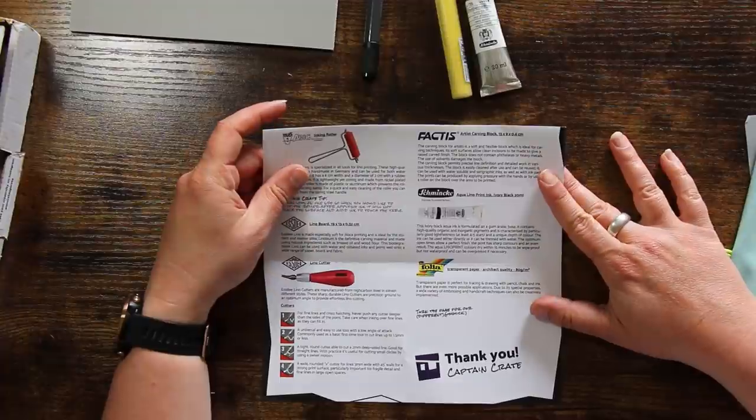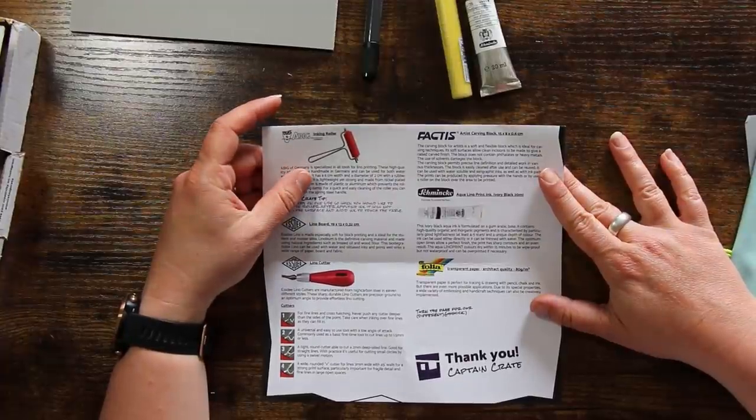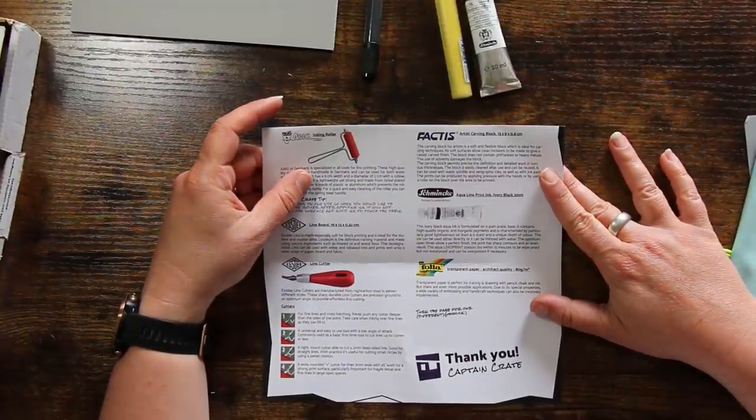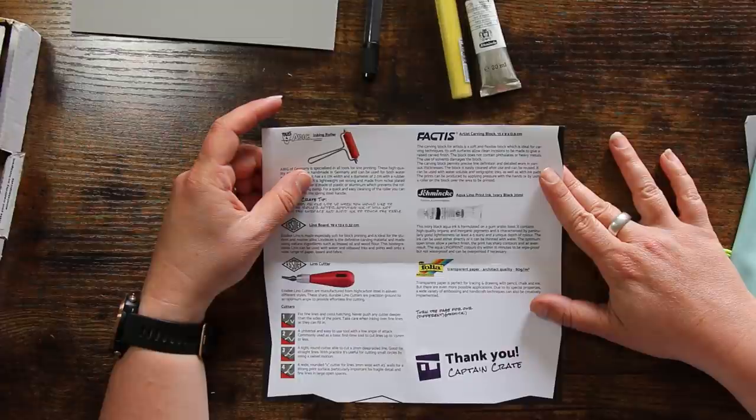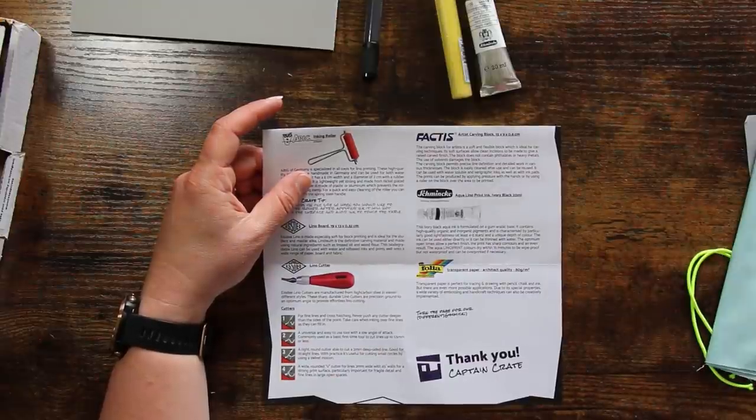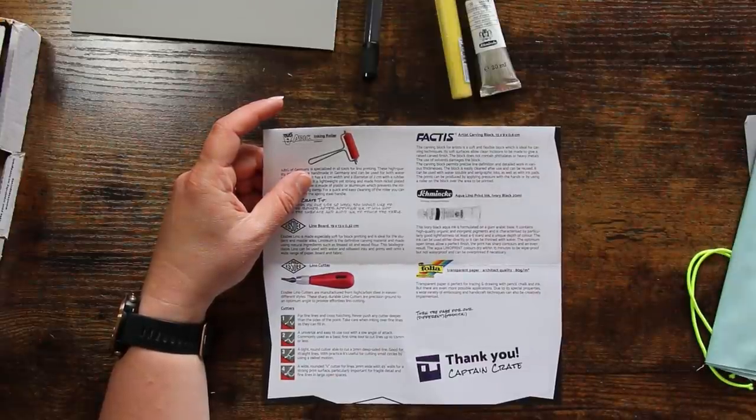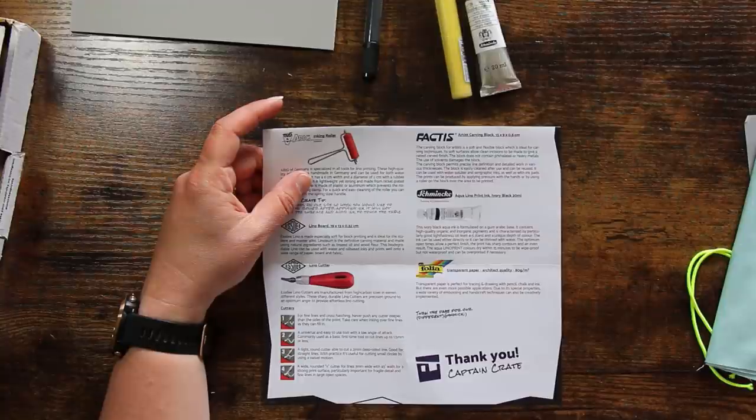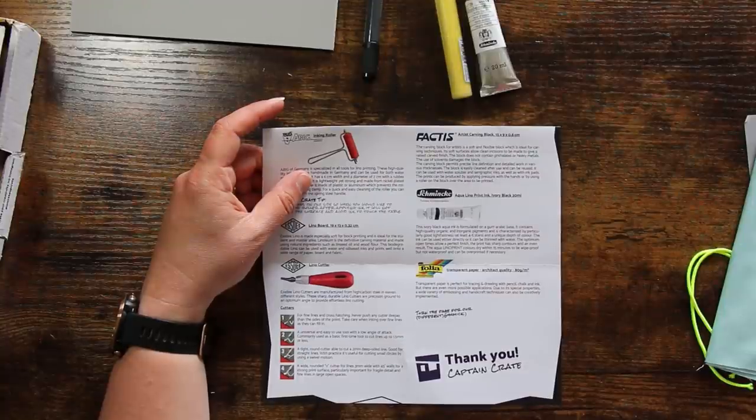Aqualino print ink in ivory black. This ink is formulated on a gum arabic base. Contains high quality organic and inorganic pigments. It's got good light fastness and it can be used directly or it can be thinned with water so it is water soluble. The aqualino print colours dry within 15 minutes to be wipe proof but not waterproof. Okay excellent.